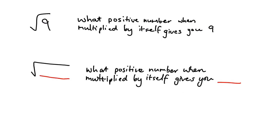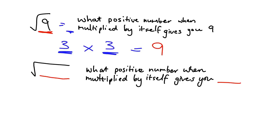Let's deal with square roots. What do they mean? If I write square root of 9, I'm asking myself: what positive number, when multiplied by itself, gives you 9 as an answer? So the square root of 9 equals the number that, when multiplied by itself, ends up giving me 9. Well, 3 times 3 gives me 9. So the square root of 9 is equal to 3.